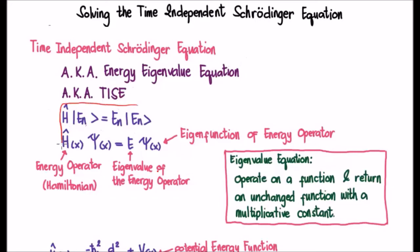So here I've written the time independent Schrödinger equation in two different ways. The first one is using direct notation and the second one is using wave function notation. Now please don't get bogged down or hung up by the fact that I'm using direct notation.